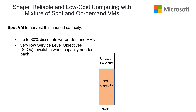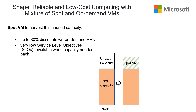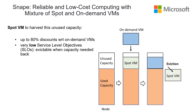Let's first talk about Spot VMs. In Microsoft Azure, there's unused capacity due to hardware maintenance, recovery, and planned capacity growth. Spot VMs are there to harvest this unused capacity. They can be evicted mainly because of new deployments from on-demand VMs. They are offered at a significantly lower price compared to on-demand VMs. In exchange for very low SLOs, they can be evicted with 30 seconds notice when that capacity is needed back, so they are suitable for workloads that can sustain or recover from interruptions.